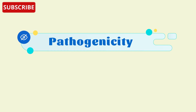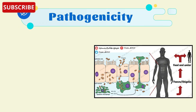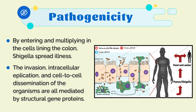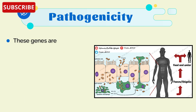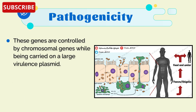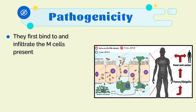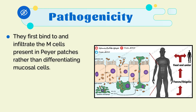Next is the pathogenicity of Shigella dysenteriae. With the help of this diagram, we will understand the pathogenicity. By entering and multiplying in the cells lining the colon, Shigella spreads illness. The invasion, intracellular replication, and cell-to-cell dissemination of the organisms are all mediated by structural gene proteins. These genes are controlled by chromosomal genes while being carried on a large virulence plasmid.